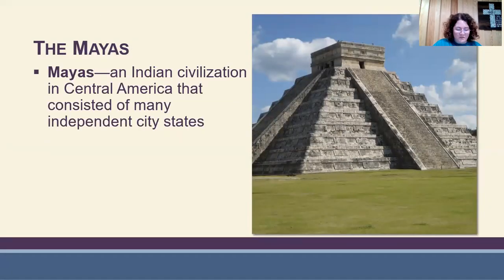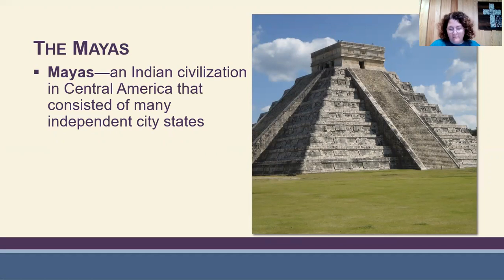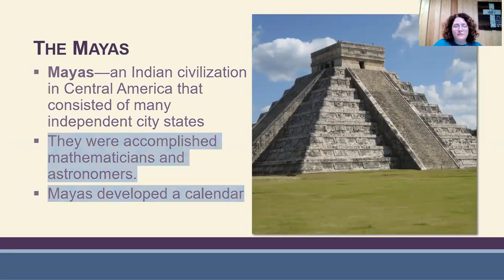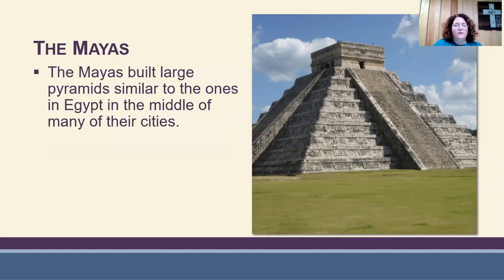The Mayas lived in Central America, in what includes Guatemala and the Yucatan Peninsula. Unlike the Aztecs and the Incas, the Mayas did not have a strong central government. The height of their culture lasted from 300 to 800 AD. They developed a calendar and were accomplished mathematicians and astronomers. They built large pyramids similar to the ones in Egypt in the middle of many of their cities.